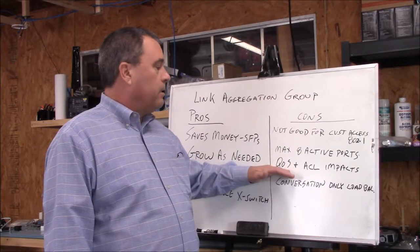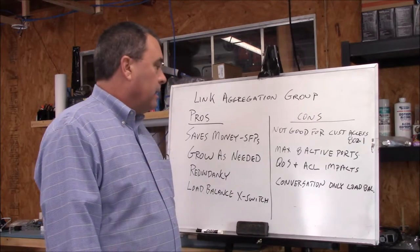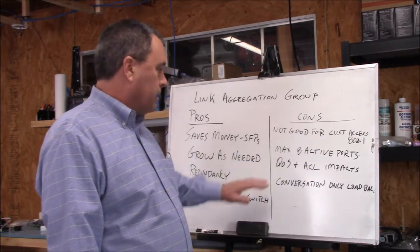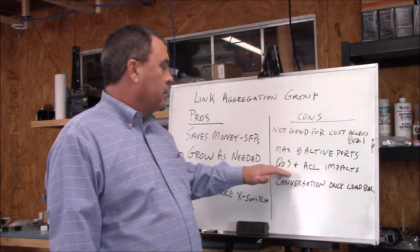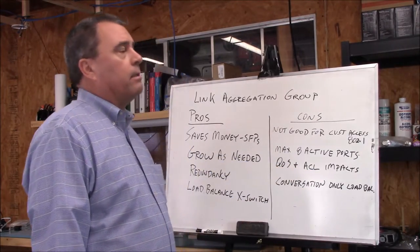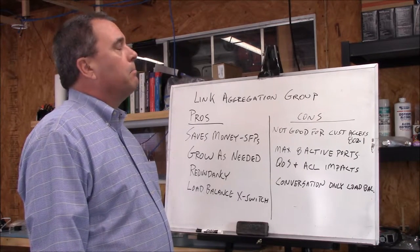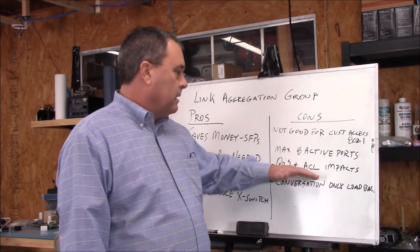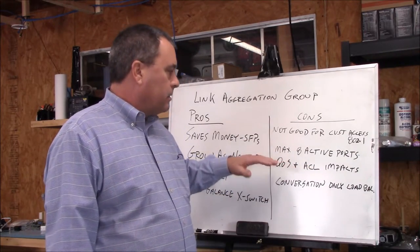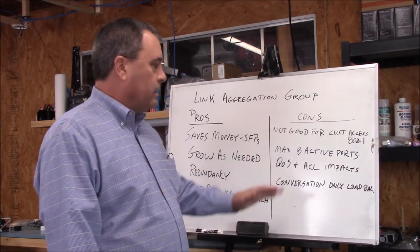There are also QoS and ACL impacts — this can get pretty complex. QoS is applied at the port level and ACLs are at the line port level. You have to be careful where you apply QoS and ACLs when you have multiple links, so you don't leave a security hole open or mess up your QoS.